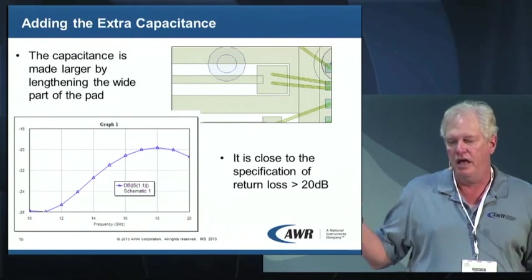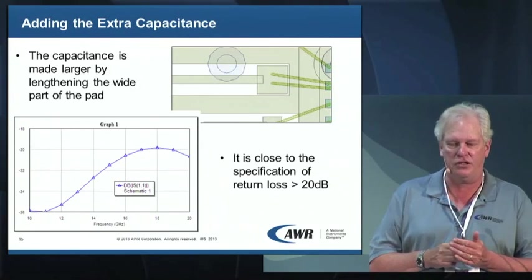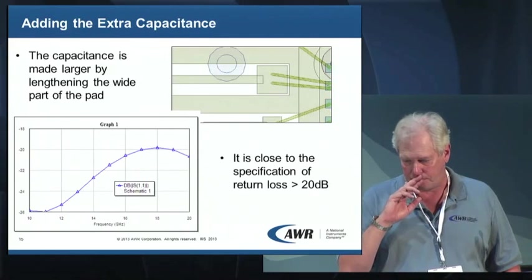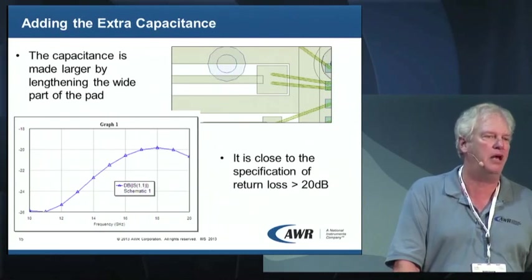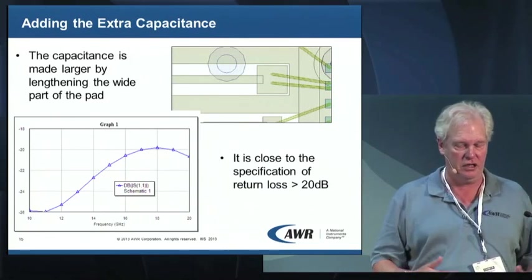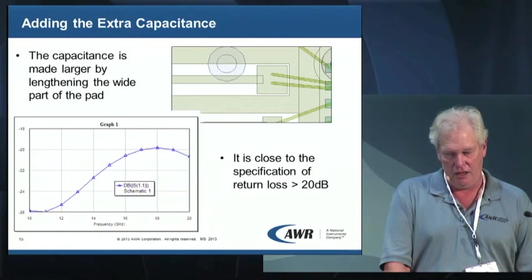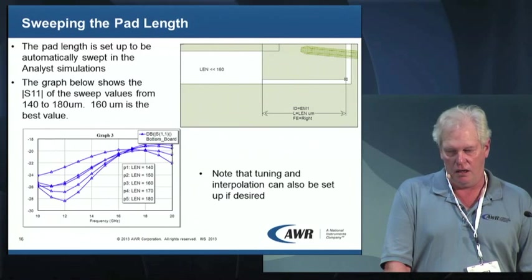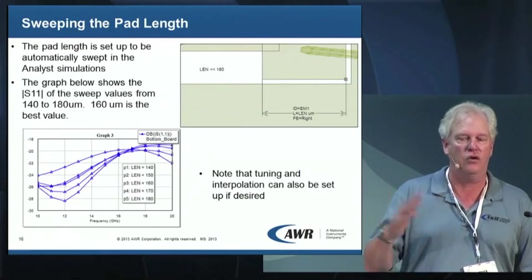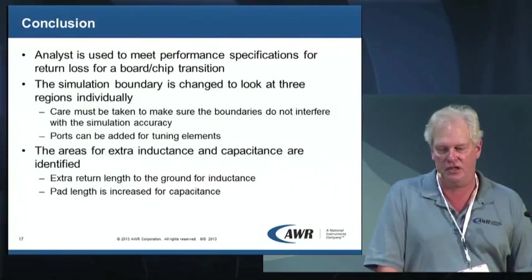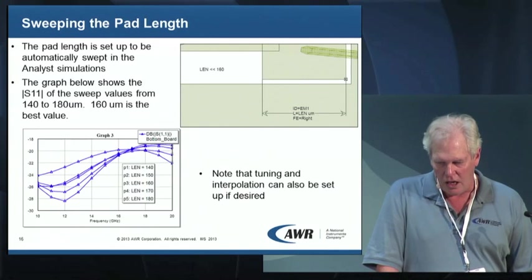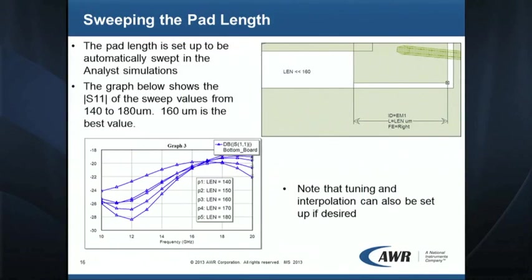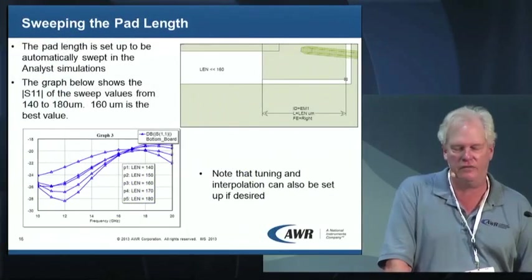For the third section — the bond wires, which are inductive — we need to add capacitance. The designer took the pad that the bond wires land on and made it bigger, getting the pad closer to the side grounds. This increases capacitance and compensates for the bond wire inductance. These are details of sweeping the pad length to find the optimal pad size for that compensation. At the best value, they basically met spec — ending up just around 20 dB on S11.